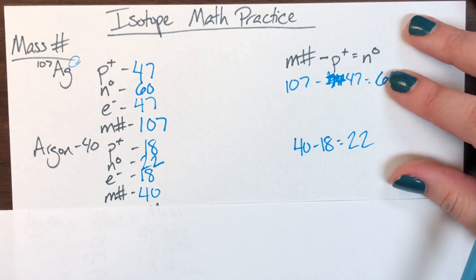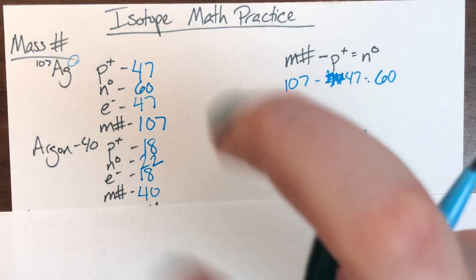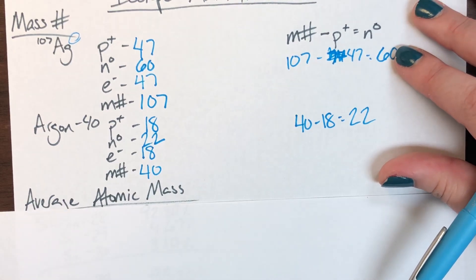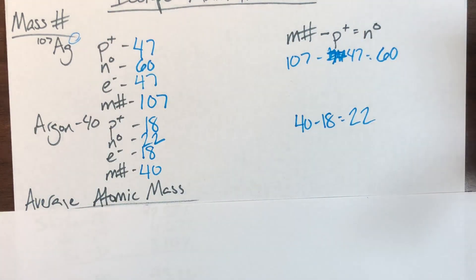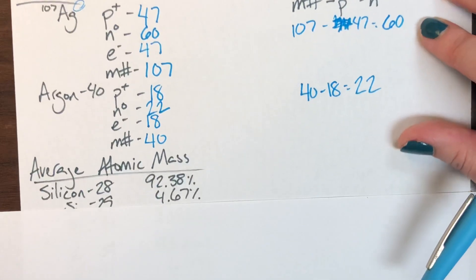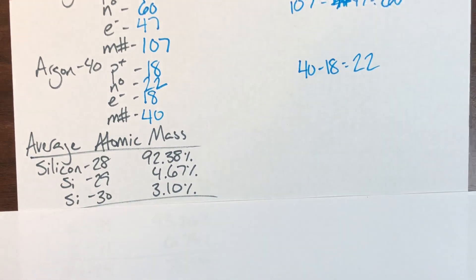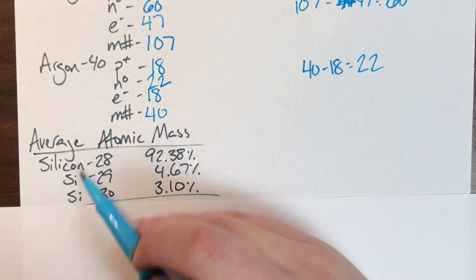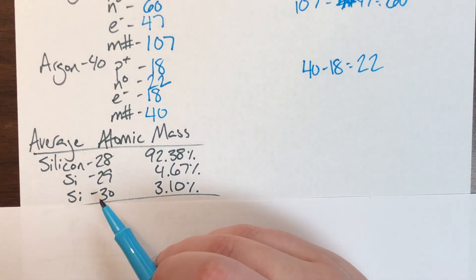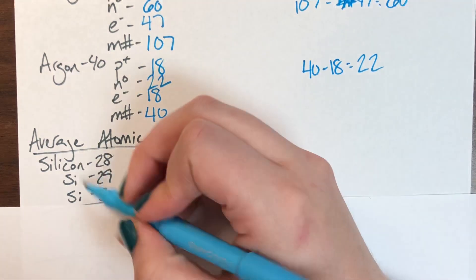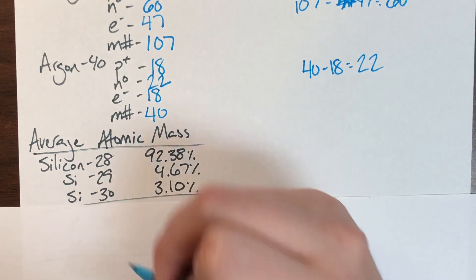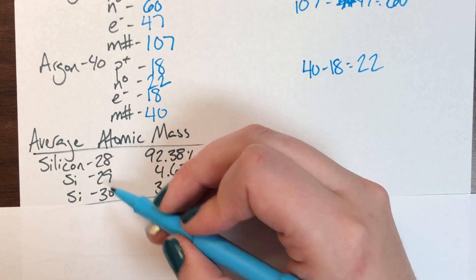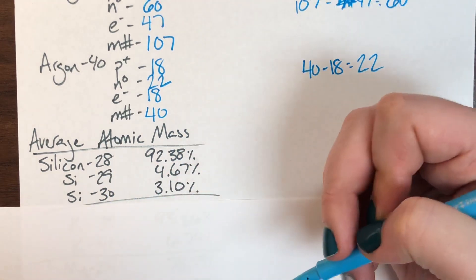Now we're going to talk about the real math here: average atomic mass. This will require some math skills. I have three different isotopes of silicon — silicon-28, 29, and 30 — along with their respective percent abundances.